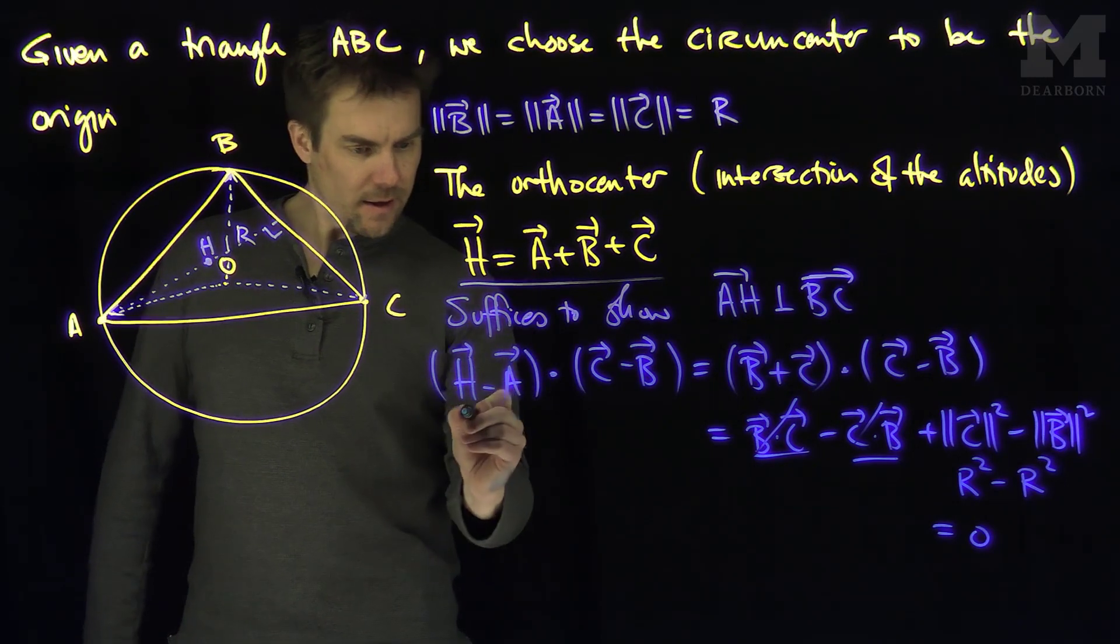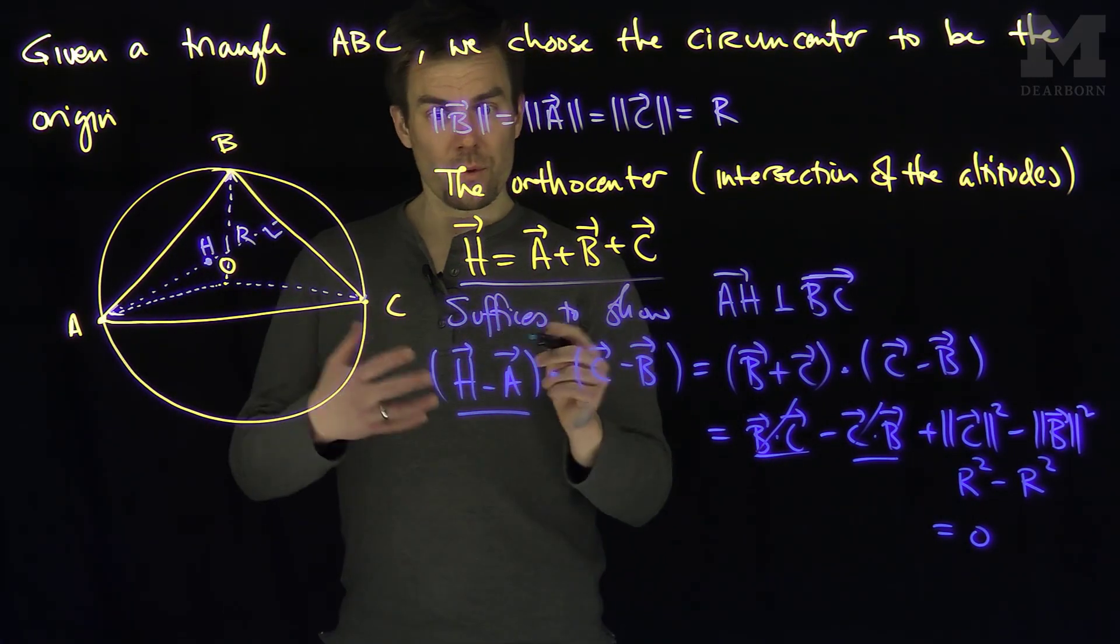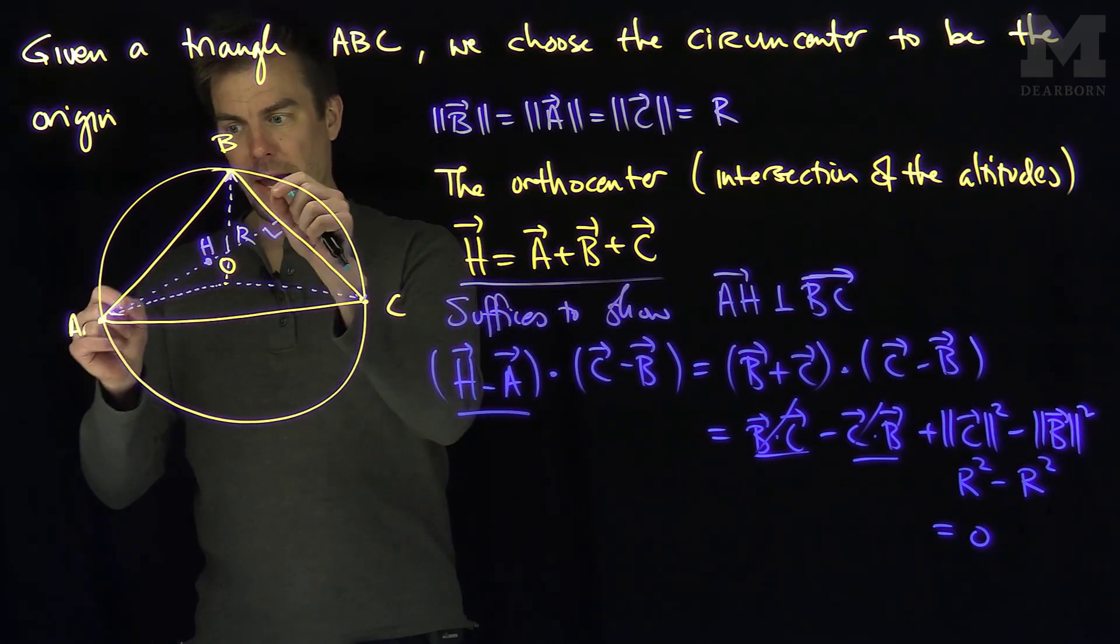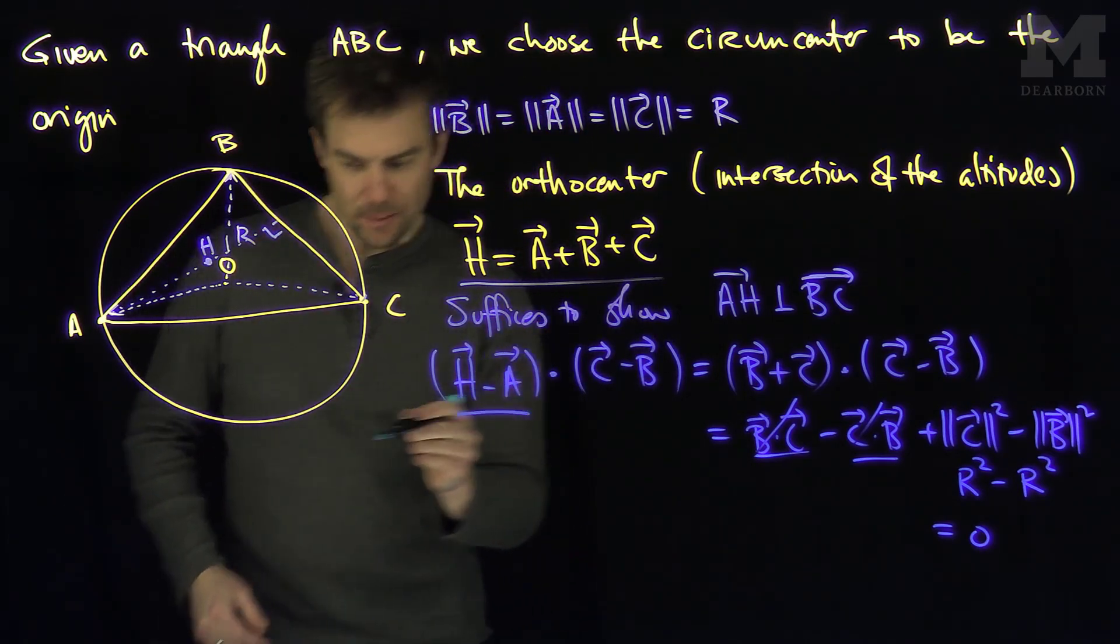So that says that the vector HA, or A to H, is perpendicular to CB. In other words, this point H is on the altitude that goes from A to the side length of BC. Similarly,